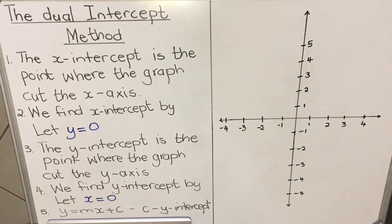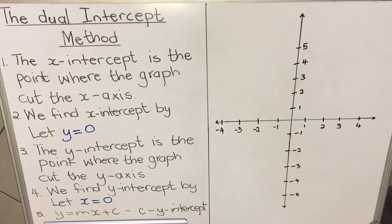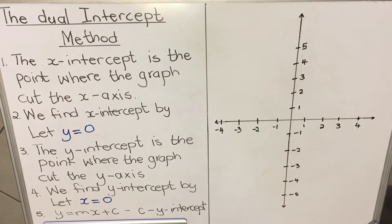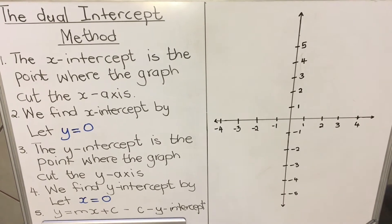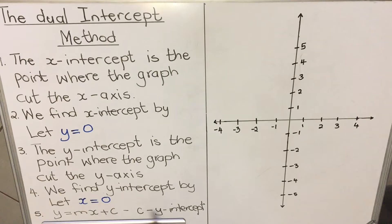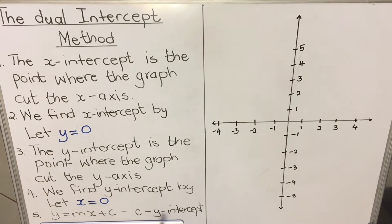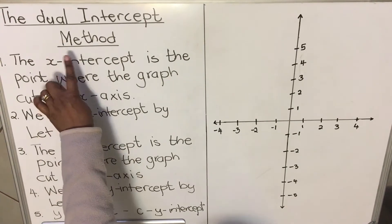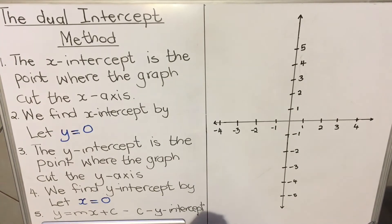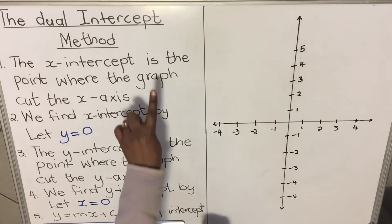Hello everyone, this is a lesson on the straight line graph. There are three methods that we can use to draw the straight line graph. This is one of them: the dual intercept method. The word 'dual' means two, and 'intercept' means where it cuts the x-axis and where it cuts the y-axis.